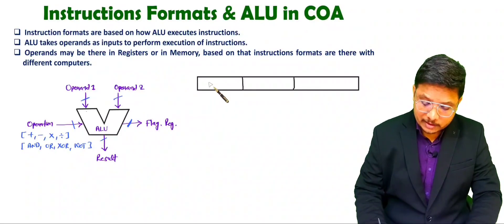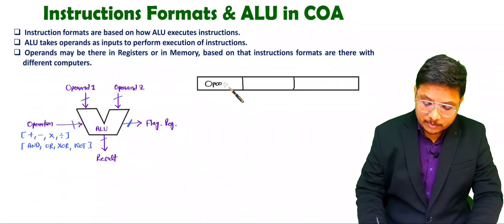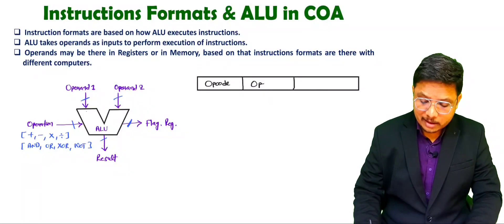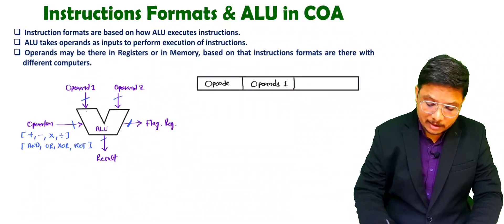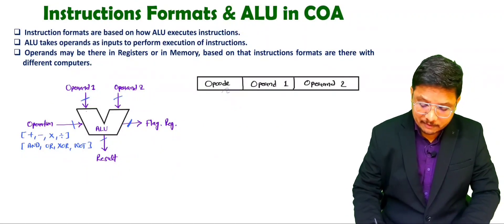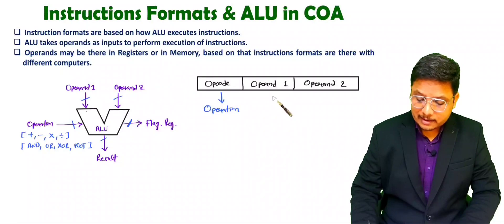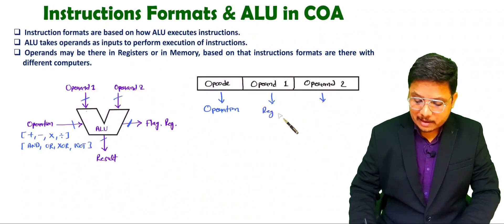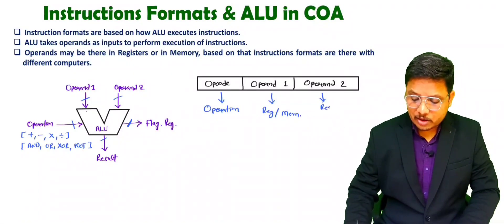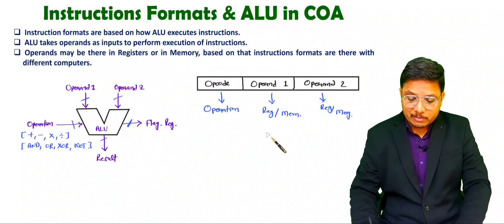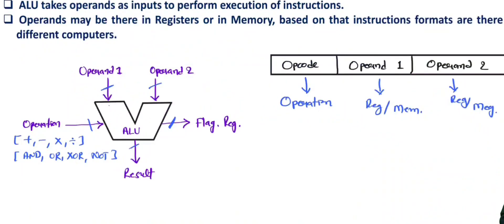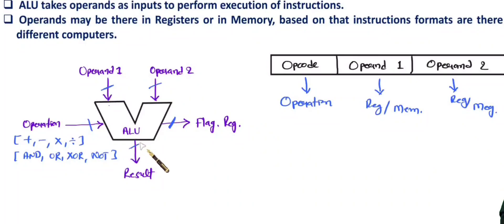To understand this, you need to understand the basic instruction format. First, you will have an opcode, which defines what operation should be performed. And here we are having two operands — operand one and operand two. This opcode defines what operation should be performed by ALU. These operands could be inside registers or inside memory. Based on the opcode, ALU will perform its task.